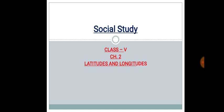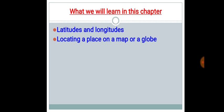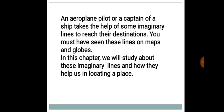The chapter name is latitudes and longitudes. So let's know what are the main concepts which we are going to learn in this chapter. First is the latitudes and longitudes, then second is locating a place on a map or a globe.